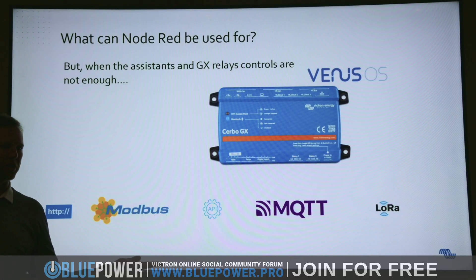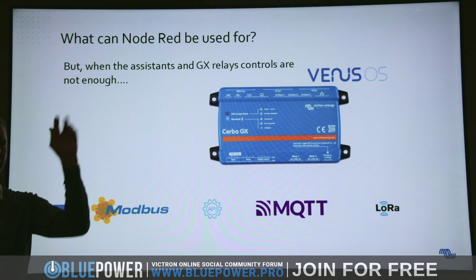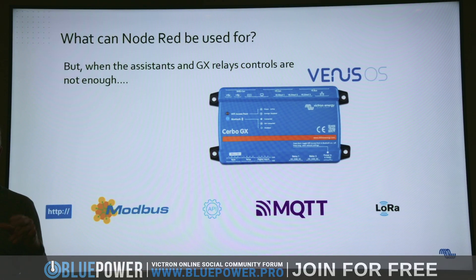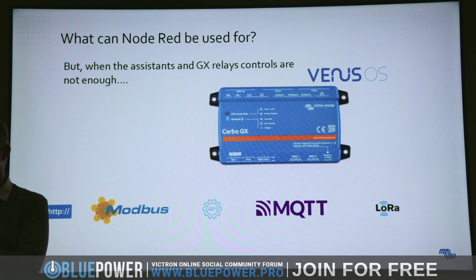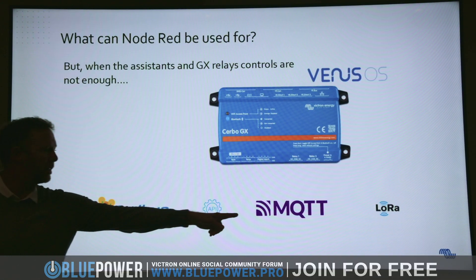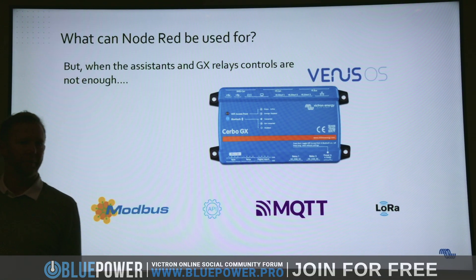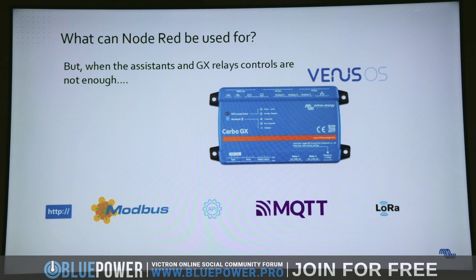That's an online service that sends out a signal about information and we can look at it, read it, and use it to do something. MQTT is an example of a data transmission protocol with very low bandwidth that works on weak internet signals. We use that extensively in our system.